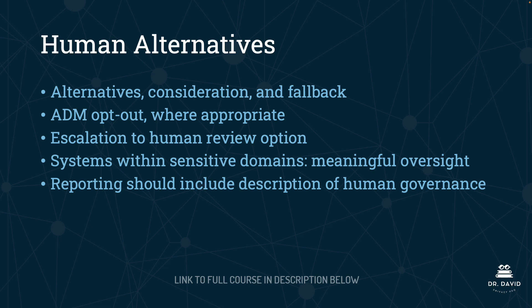This principle also advocates for ADM opt-out. ADM — automated decision-making, sometimes written as algorithmic decision-making — should have an opt-out where appropriate for users, an escalation to human review option, and meaningful oversight for systems within sensitive domains. Reporting should include a description of human governance: how are human beings using this system, how are they monitoring it, what maintenance is done, and how involved are they in decision-making?